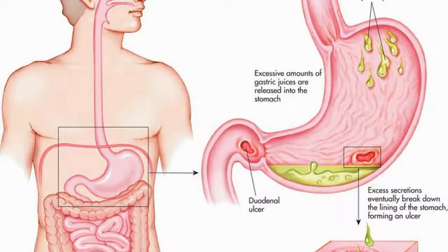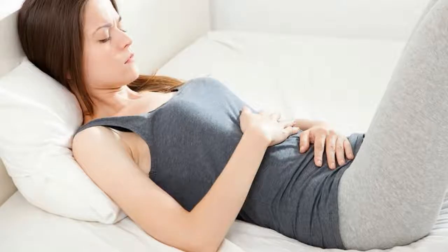There are certain similarities between the two entities. Gastric and peptic ulcers present the same, with upper abdominal burning pain, indigestion, chest pain, and sweating. They can also present as black, tarry stools due to bleeding from an ulcer.